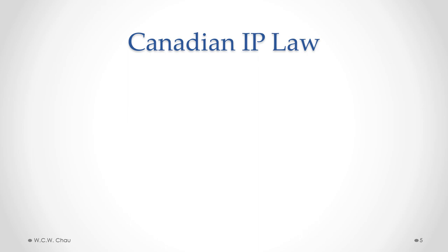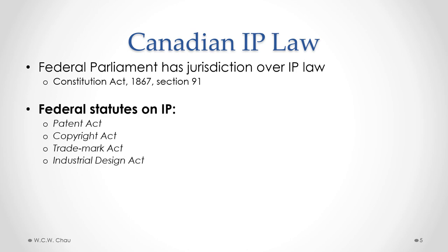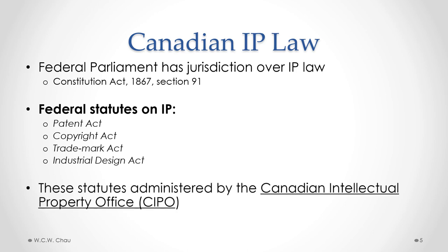The statutes that govern Canadian IP law come from the federal parliament. The federal parliament has jurisdiction under the Constitution Act 1867, section 91. The specific federal statutes on IP are the Patent Act, Copyright Act, Trademark Act, and Industrial Design Act. We'll look at the first three in this module. All of these statutes are administered by the Canadian Intellectual Property Office, or CIPO.